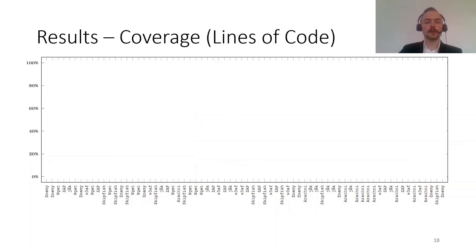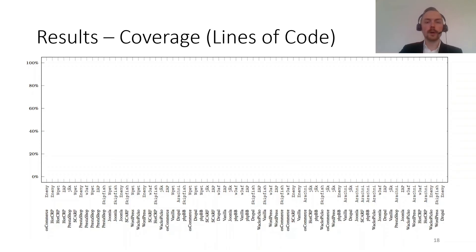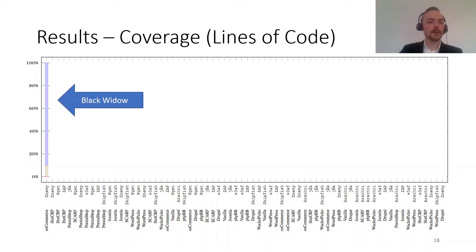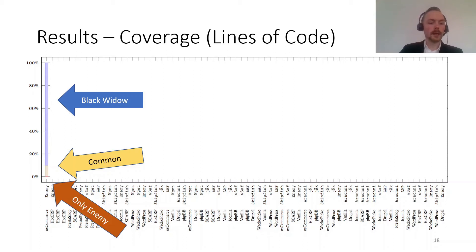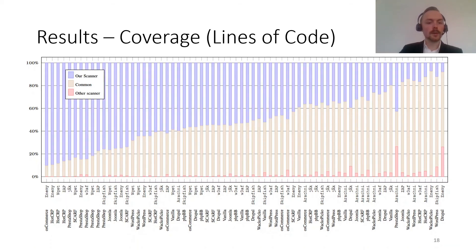The first result is coverage — the number of lines of code executed on the server side. We compare Black Widow to all other scanners for every application. For example, Black Widow versus Enemy of the State on OS Commerce: Black Widow uniquely finds about 90% of the lines of code, they share about 10% in common, and Enemy of the State finds only a few lines that Black Widow does not. Across all applications and scanners, the main takeaway is that the blue area — Black Widow's unique coverage — is much larger than the red area. Compared to the union of all other scanners per application, our improvement ranges from 63% up to 280%.